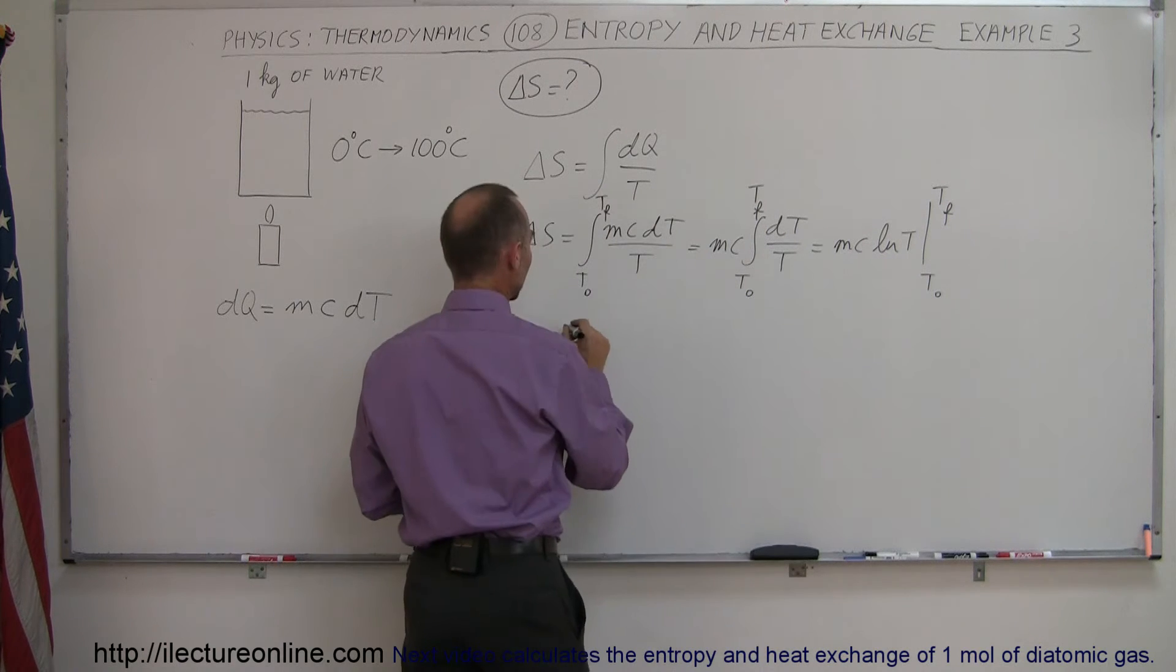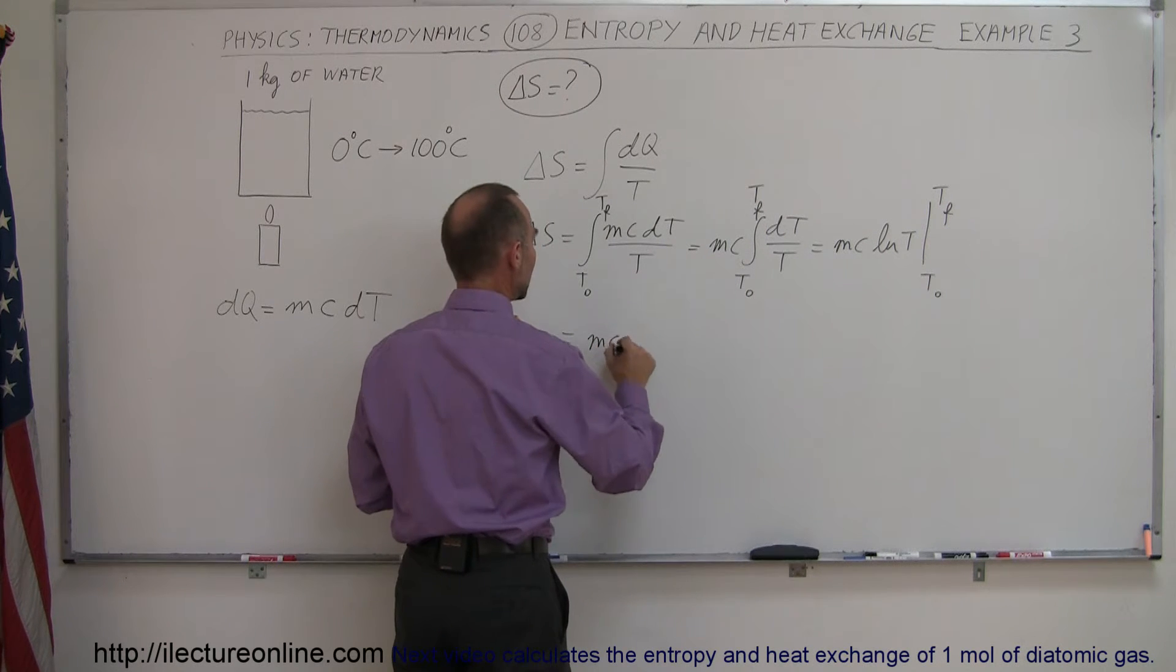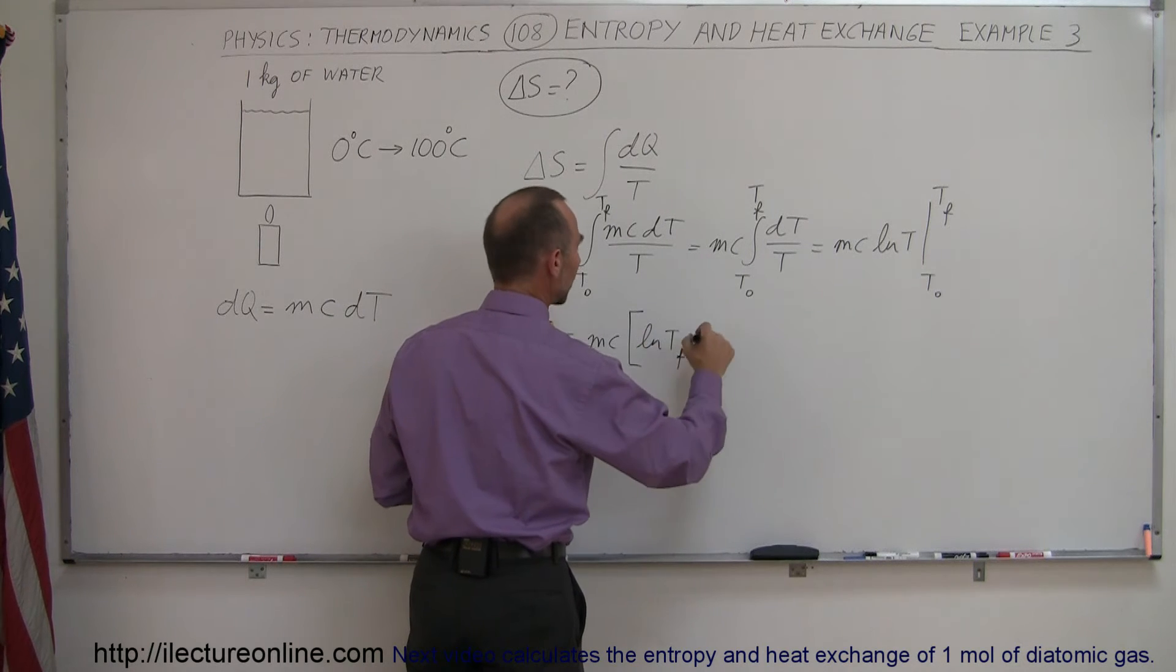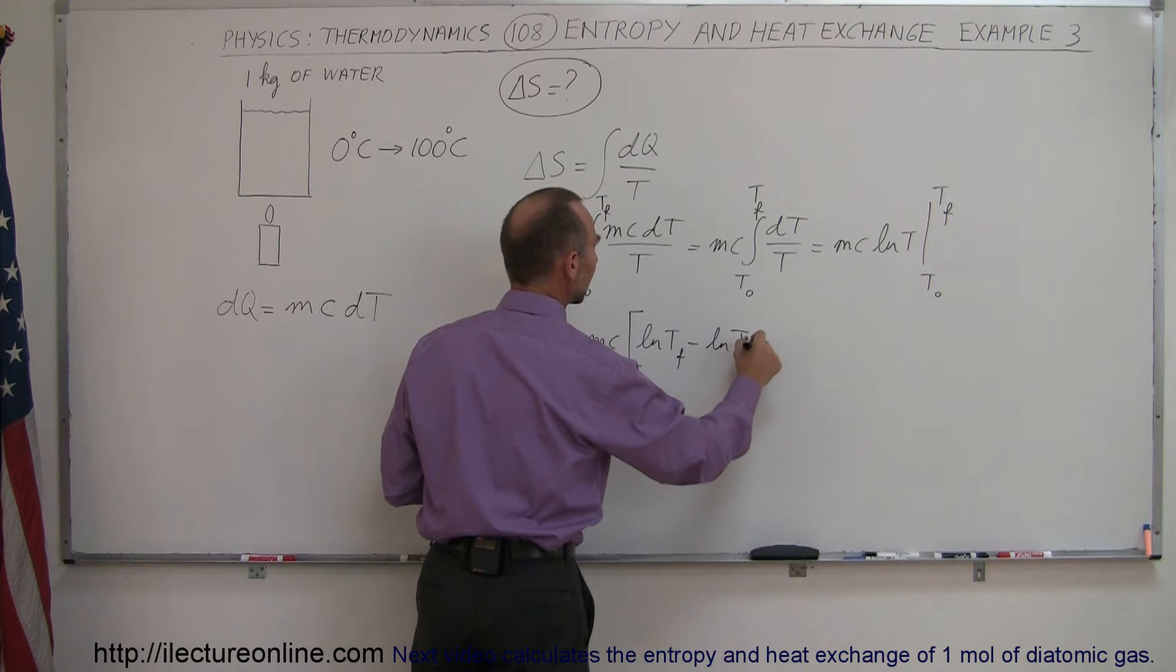So when we plug those limits in that is equal to mc times when we plug in the upper limit we get the natural log of T final minus when we plug in the lower limit which is the natural log of T initial.